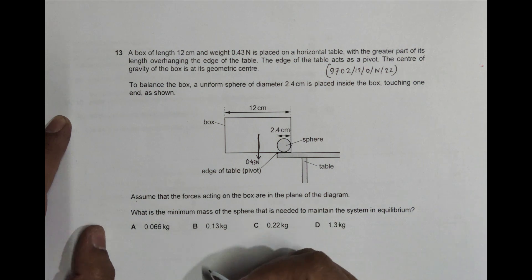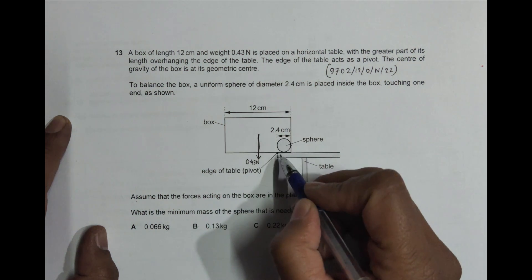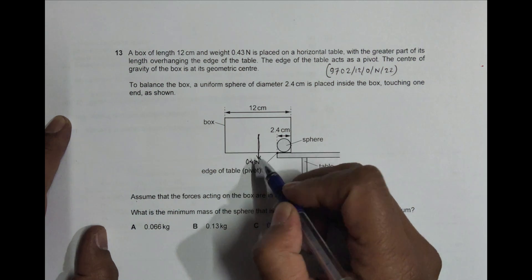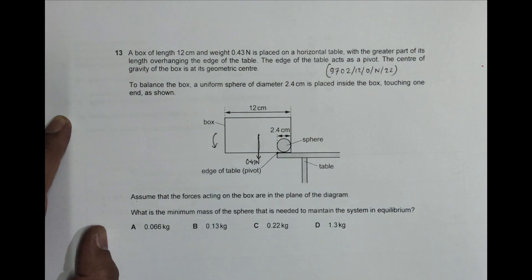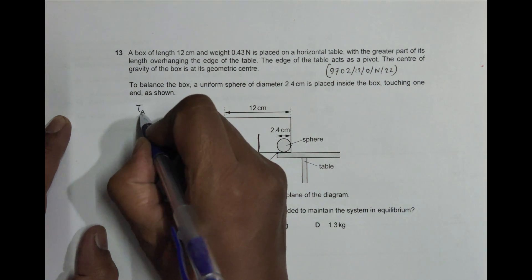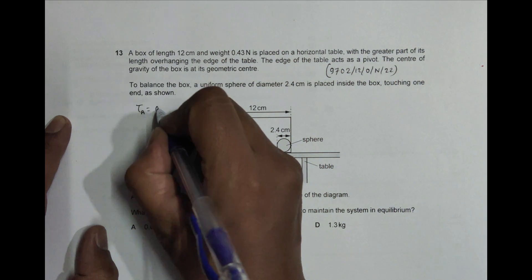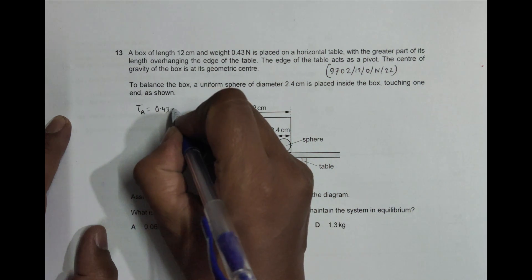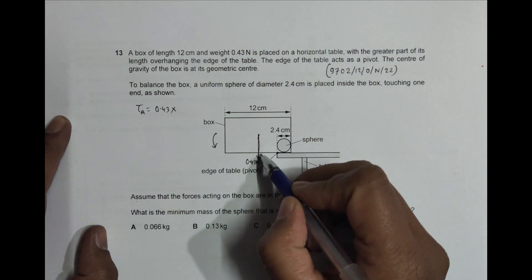So what's the minimum mass of the sphere that is needed? First of all, let us find the torque or moment given by this box. So this is the pivot, the force is like this. So this box will try to rotate like this, anti-clockwise. And this anti-clockwise torque tau_a will equal the force here, which is 0.43 Newton, into the perpendicular distance from the line of action of this force from this fulcrum.